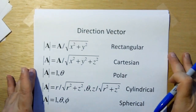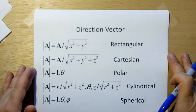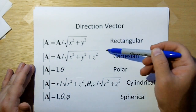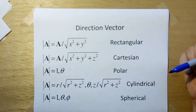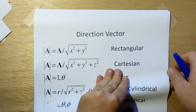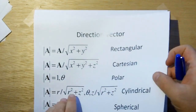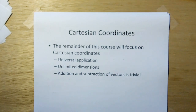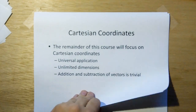These are the ways that you can get the direction vectors in all the different systems. I already covered the Cartesian, which includes rectangular. You can look at the others on your own. For the remainder of this course, we're going to focus on Cartesian coordinates including rectangular, because Cartesian coordinates have pretty much universal application and can go to virtually unlimited dimensions, while subtraction and addition of vectors is a trivial thing.